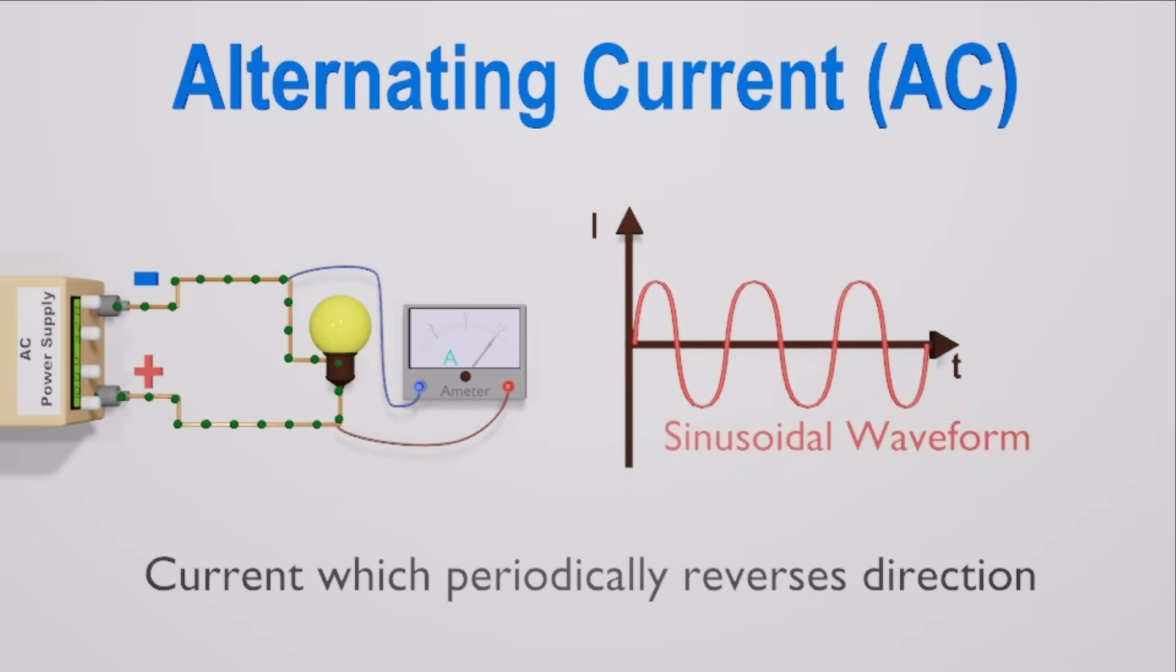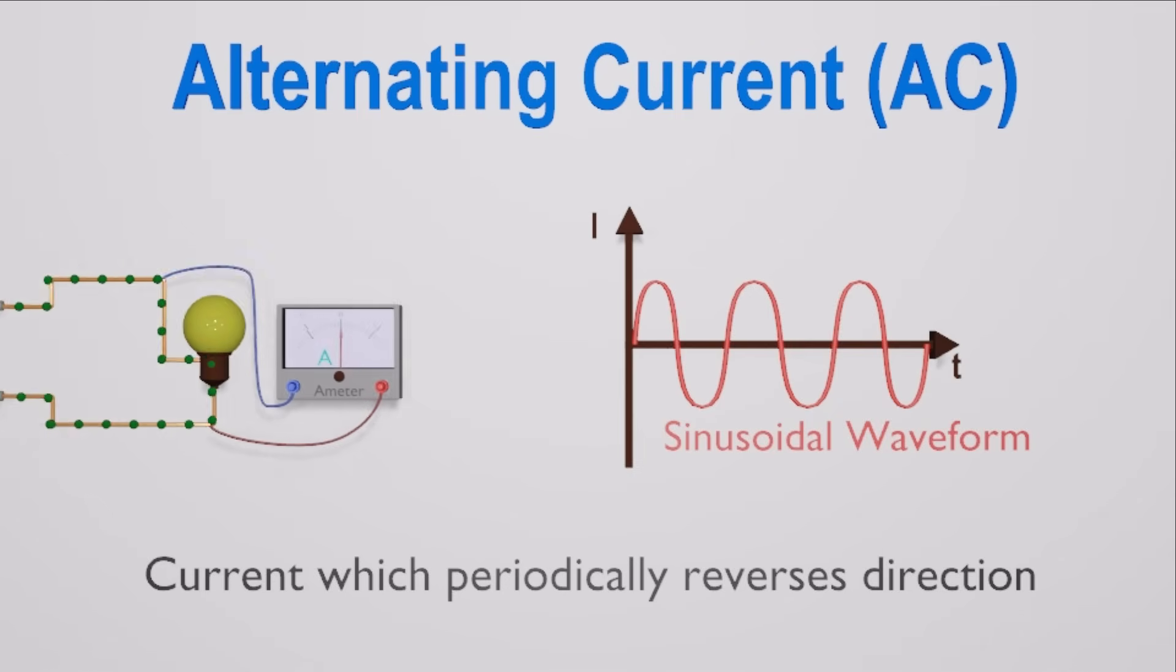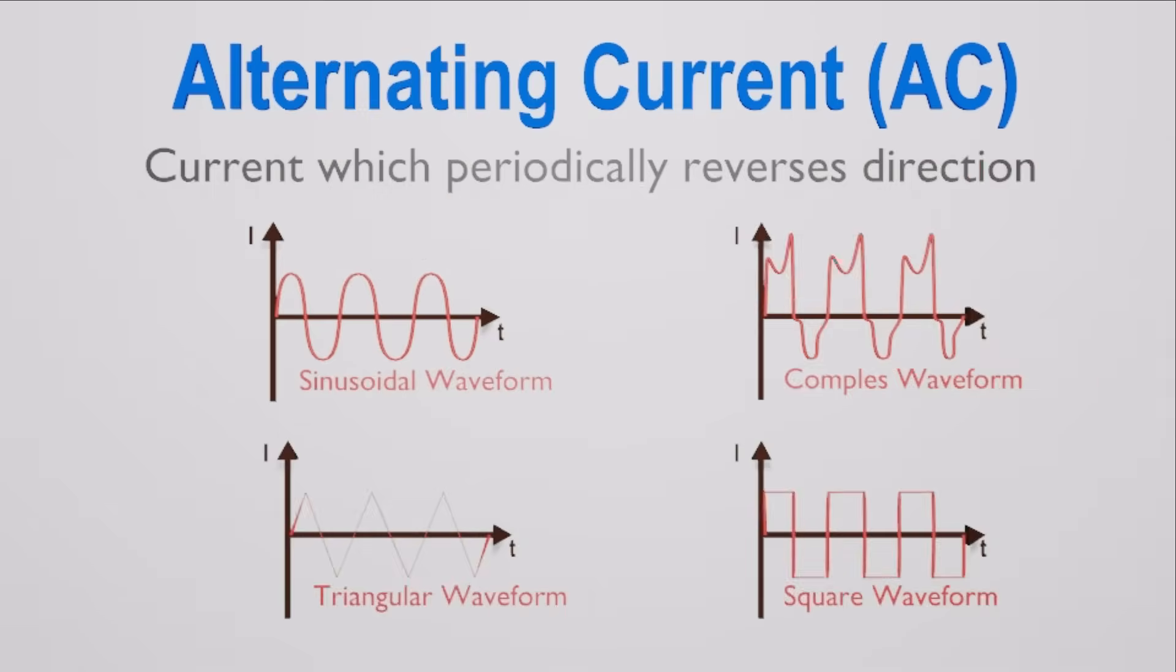The most common AC waveform that is used in electrical and electronic engineering is the sinusoidal waveform. However, an alternating AC waveform may not always take the shape of a smooth shape based around the trigonometric sine or cosine function.